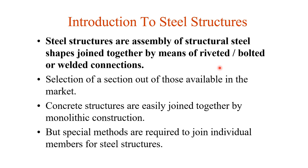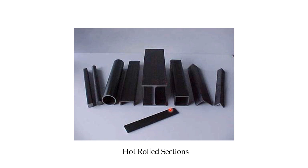Regarding hot-rolled sections: these are called hot-rolled sections because molten steel is poured into molds, and these sections are formed from that process. The molten steel is molded into the molds and these section shapes are produced — that is what is called hot-rolled sections.